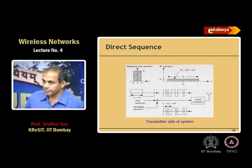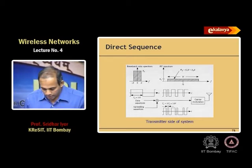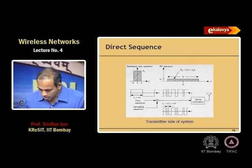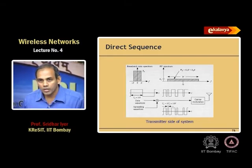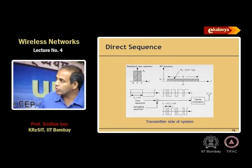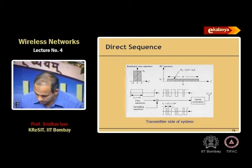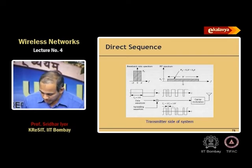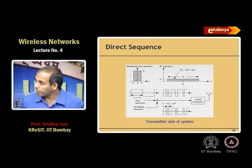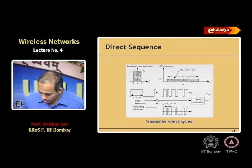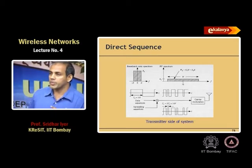In direct sequence, the basic idea is you have some data which is spread over a large spectrum. What remains constant is the area under the signal. This spreading is achieved using a spreading waveform. For each bit in the data waveform, you XOR it with the spreading sequence, and the result is the actual bit transmitted on the wireless medium.